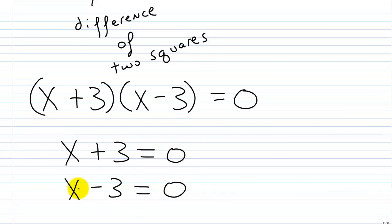I can solve these by inspection. I know that the first one here, negative 3 plus 3, would give me 0. So the solution here is x equals negative 3. And then down here, x minus 3 equals 0. I know the solution is positive 3.